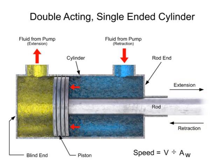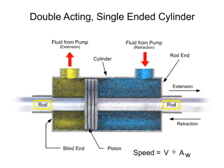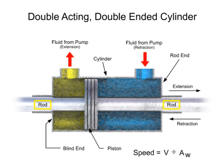All the cylinders shown to this point have been single-ended — they have only one working rod. On special cylinders, two rods may be used. These are called double-ended cylinders.